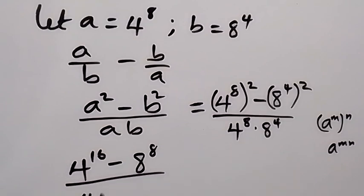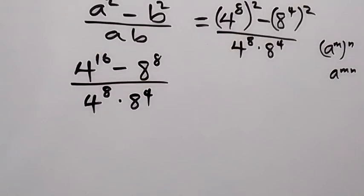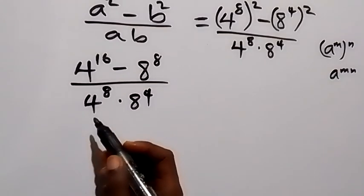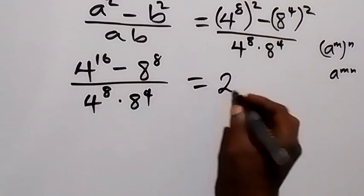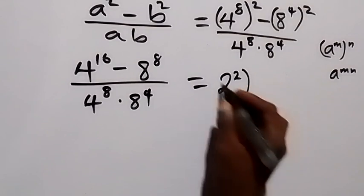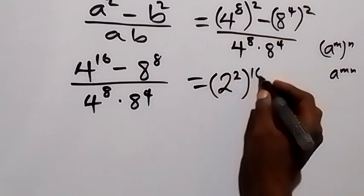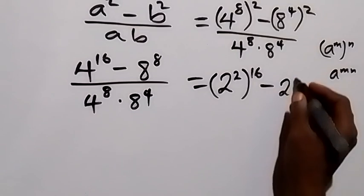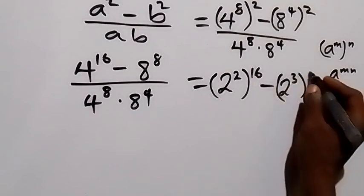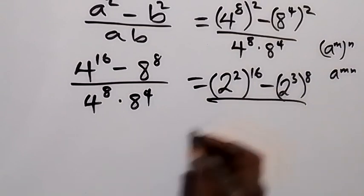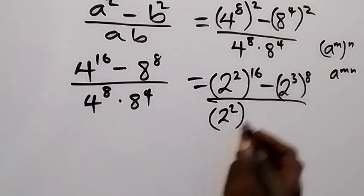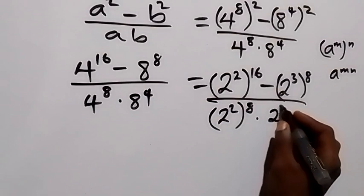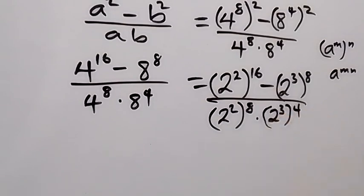In the next step, let's take everything to base 2. Here 4 can be written as 2 raised to power 2, then raised to power 16. Then minus: 8 can be written as 2 raised to power 3, then raised to power 8. Divided by: we have 2 raised to power 2 then raised to power 8, times 2 raised to power 3 then raised to power 4.